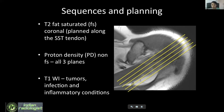The next sequences we take are proton density images in all three planes — non-fat-saturated sequences. Non-fat-saturated because they give better visualization of the tendons, small ligaments, labrum, and cartilage. Lastly, T1-weighted images are not taken in all scans, but in conditions where you are suspecting tumors, infections, and inflammatory conditions, you need a T1-weighted sequence.